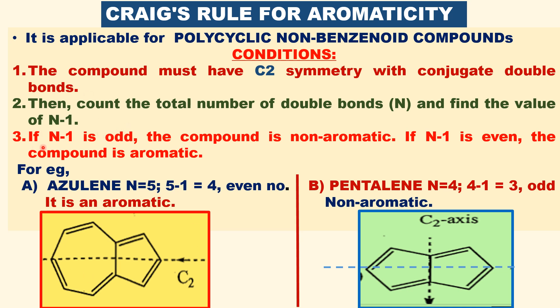If N minus 1 is odd, the compound is said to be non-aromatic. If N minus 1 is even, then the compound is said to be aromatic.